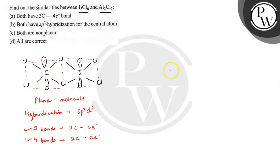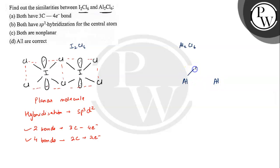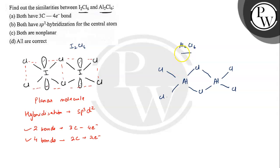Now we will check the structure for Al2Cl6. These are the two aluminum atoms, and the six chlorine atoms are arranged like this. So this is the structure of the Al2Cl6 molecule.